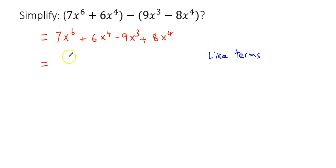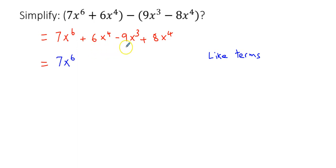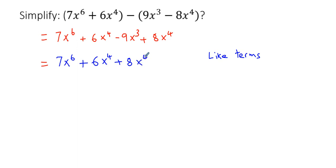I see 7x to the power of 6 — nothing else has x to the power of 6, so it stands by itself. Then 6x to the power of 4 and 8x to the power of 4 are like terms, so let us group them: 6x to the power of 4 plus 8x to the power of 4.